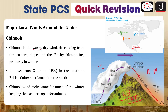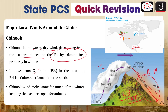Chinook is a warm and dry wind descending from the eastern slope of the Rocky Mountains. It flows from Colorado, USA in the south to British Columbia, Canada in the north. Chinook winds melt snow through much of the winter, keeping pastures open for animals, since these warm winds cause snow and ice in that area to melt.